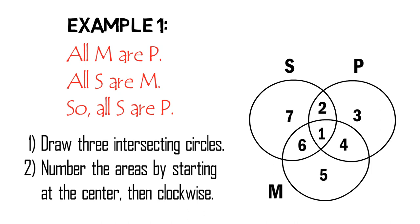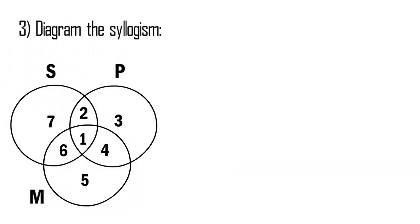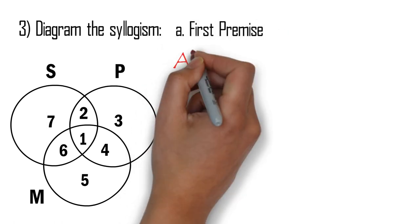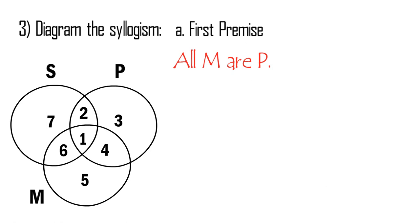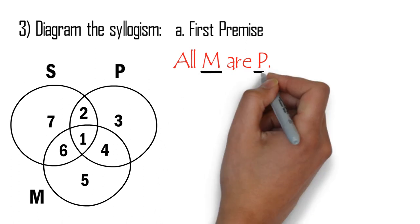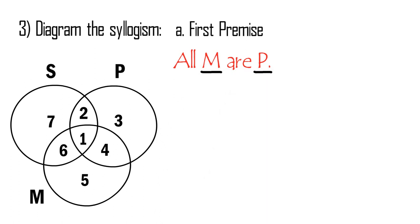Now that we have drawn three intersecting circles, each for S, P, and M, our next task is to diagram the syllogism. Let us start with the first premise: all M are P. Since the premise talks about the circles for M and P only, we will imagine that circle S does not exist. Since the premise says all M are P — that is, all members of M are members of P — we will shade areas 5 and 6 to show that all members of M, which are areas 1 and 4, are part of P.